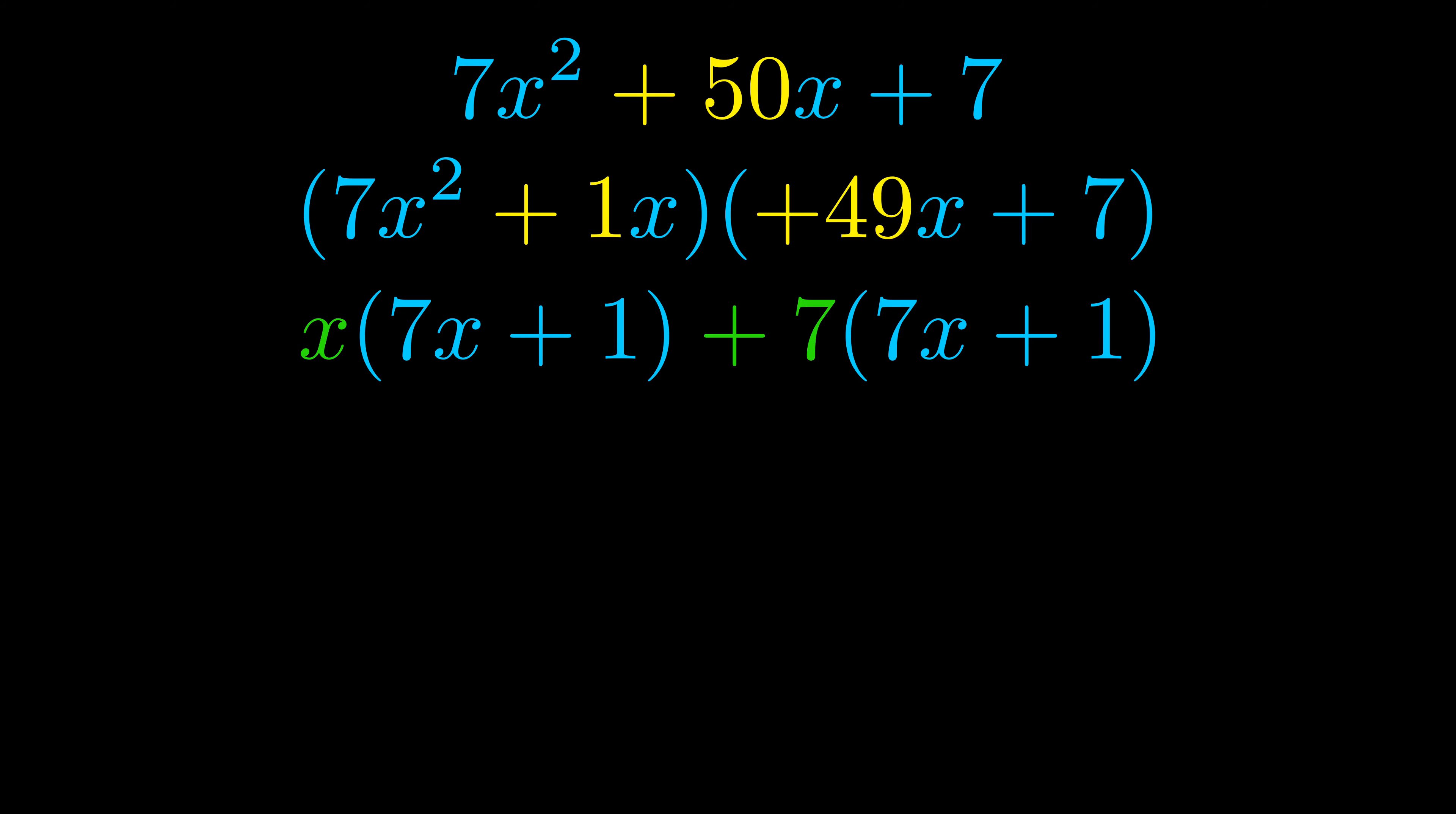Notice also how what remains inside of the parentheses is the same in both cases. The blue values are the same. Those blue values will become one of our factors and we will combine the two green values, the GCFs that we pulled out, to get the other one. And that is our fully factored equation.